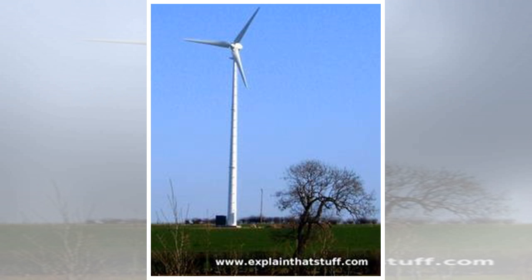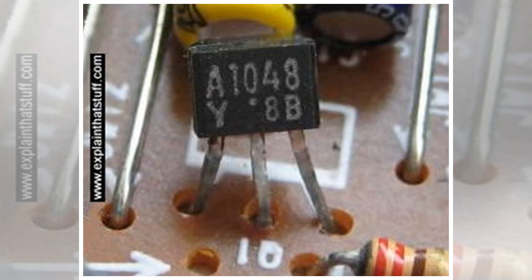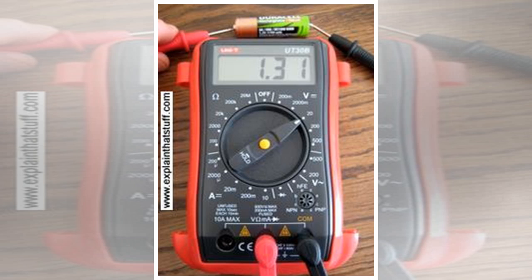What is electricity? Electricity is a type of energy that can build up in one place or flow from one place to another. When electricity gathers in one place it is known as static electricity. The word static means something that does not move. Electricity that moves from one place to another is called current electricity.